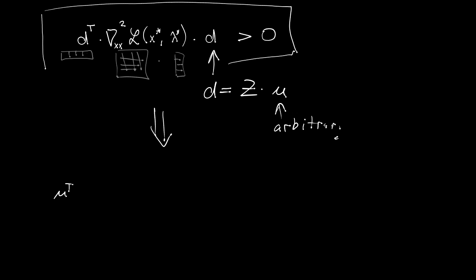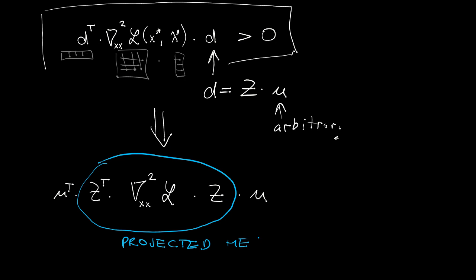So what we get is the following: we will get U transposed times Z transposed times Hessian times Z times U. Now, this is a new function that we will call projected Hessian. And we can now check for positive definiteness of this new matrix freely, because U is now arbitrary.